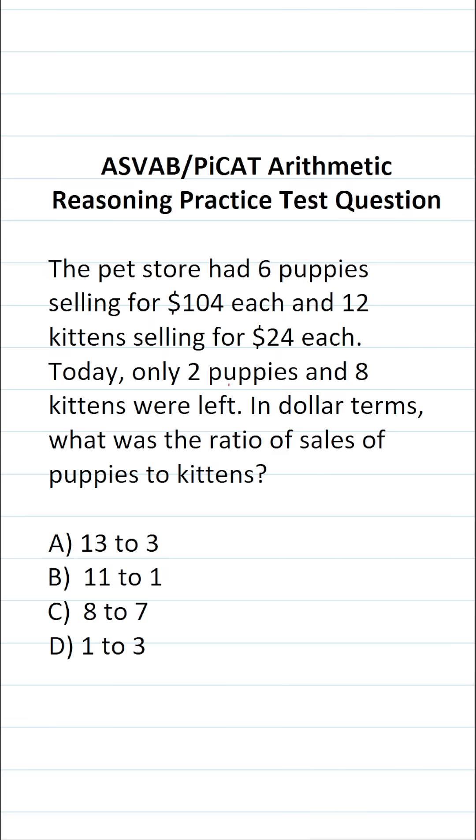This arithmetic reasoning practice test question for the ASVAB and PICAT says the pet store had six puppies selling for $104 each and 12 kittens selling for $24 each. Today, only two puppies and eight kittens were left. In dollar terms, what was the ratio of sales of puppies to kittens?